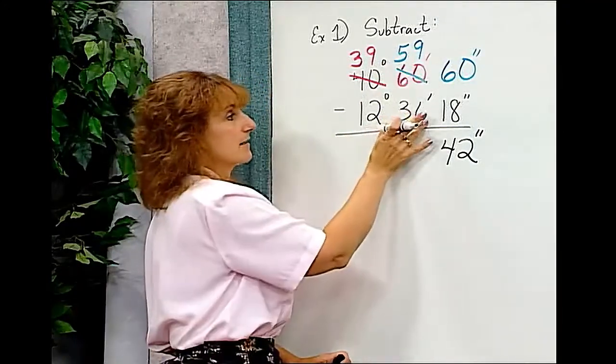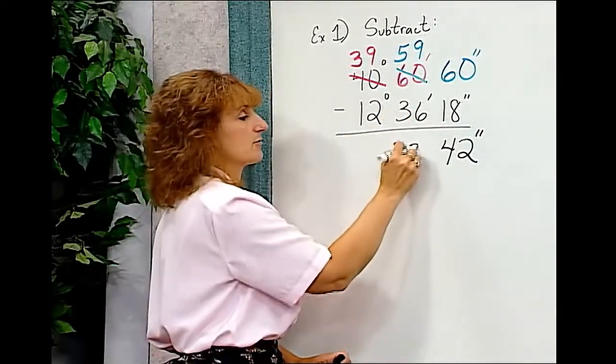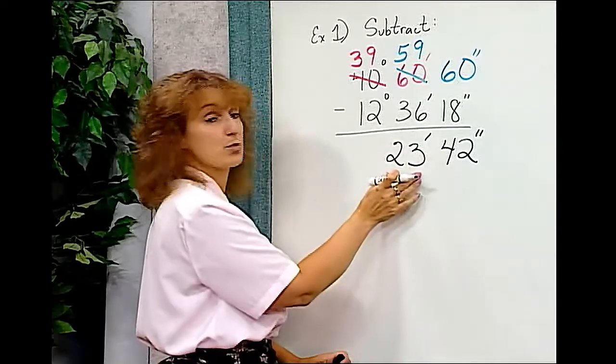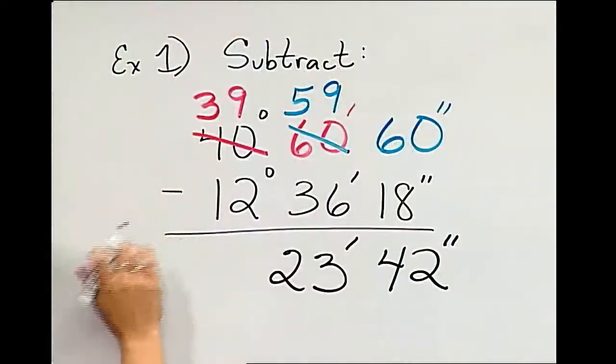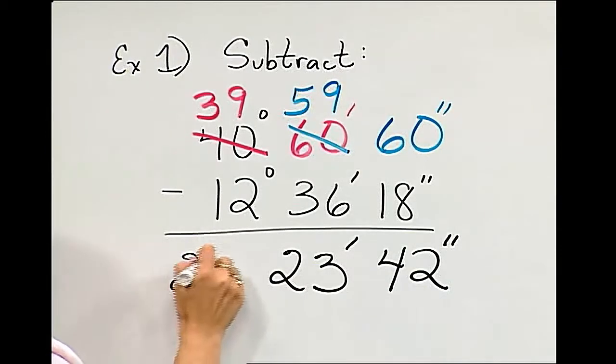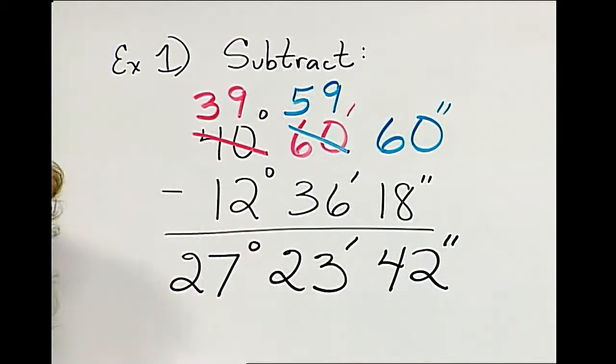Minutes minus minutes. I'm going to subtract those. And get 23 minutes. And then degrees minus degrees. I'm going to subtract those. And get 27 degrees.